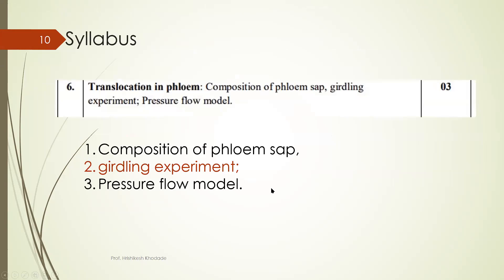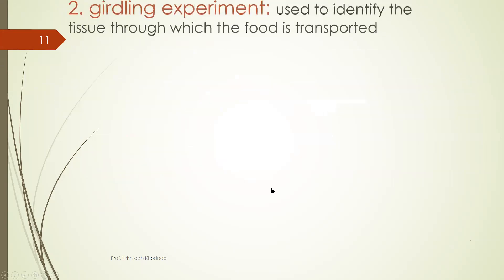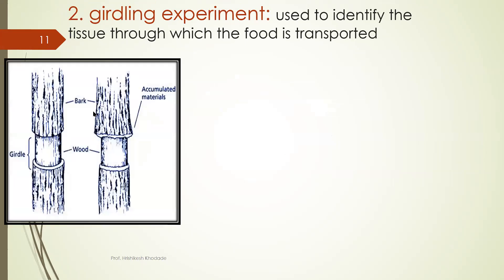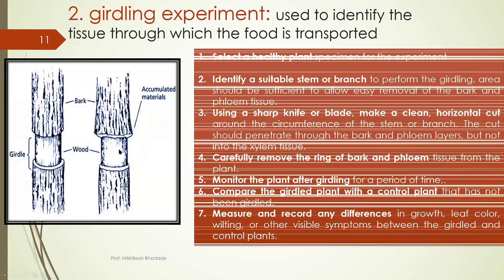So syllabus point of view we have discussed about composition of phloem sap. Now we will talk about girdling experiment. So what is girdling experiment? This is very easy experiment. I think you must have studied about this experiment in your previous classes where a suitable plant material is selected and the bark of that plant material is removed.